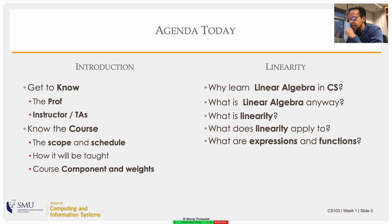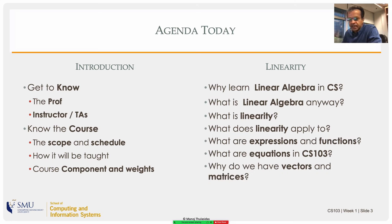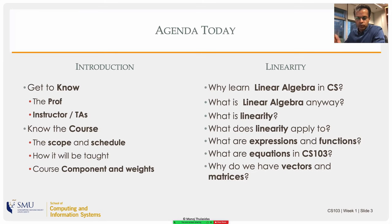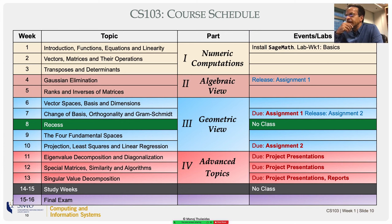That will lead us to concepts of expressions, functions, variables, transformations, and mappings. Then we will take a philosophical look at what equality means and what equations are, especially in our context. The idea of linearity will lead naturally to the concept of vectors and matrices. This course is divided into four parts: the first three lessons cover what I call numeric computations, then we move on to the algebraic view.